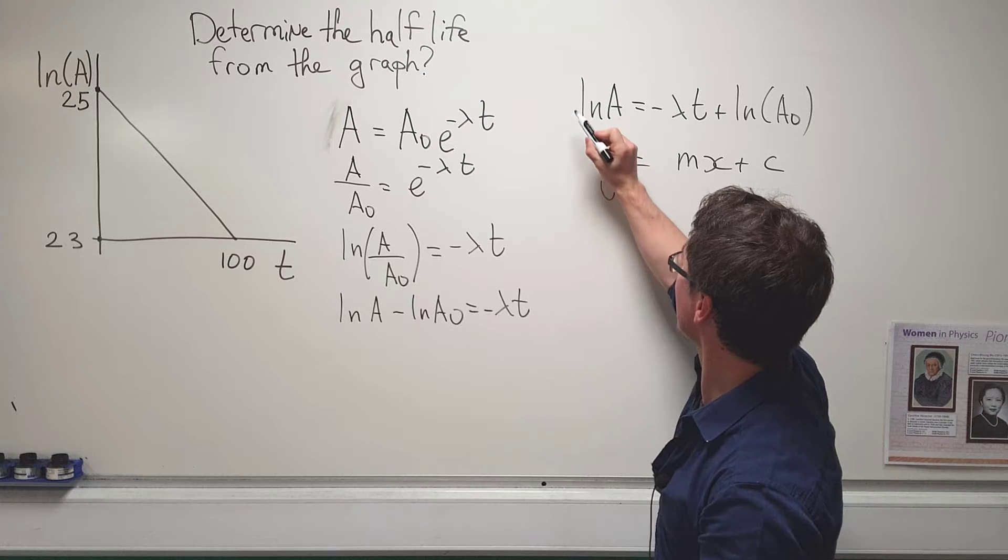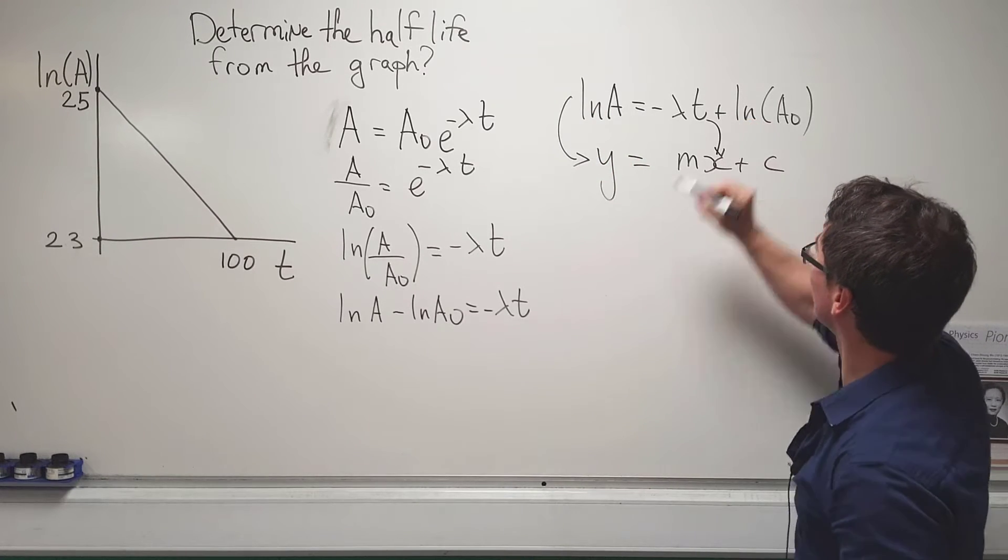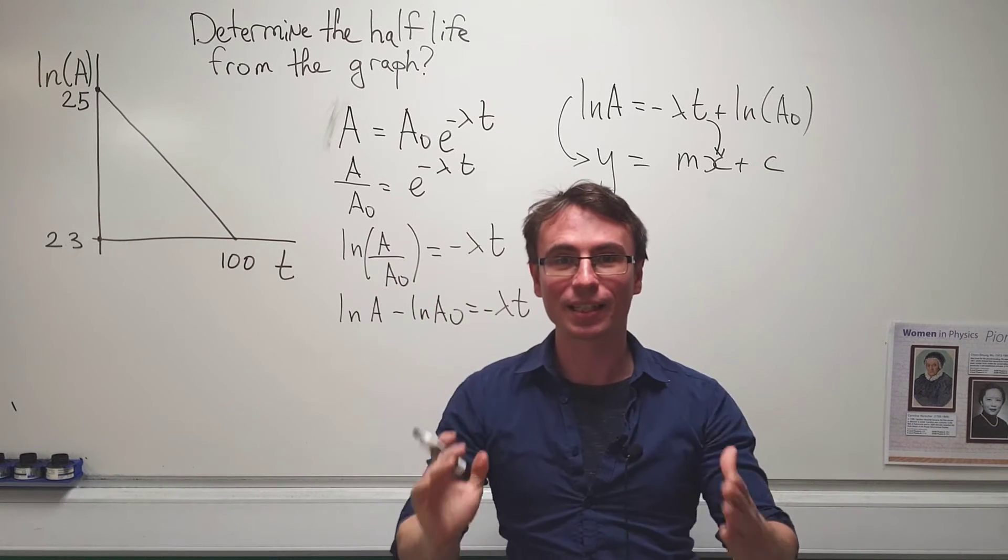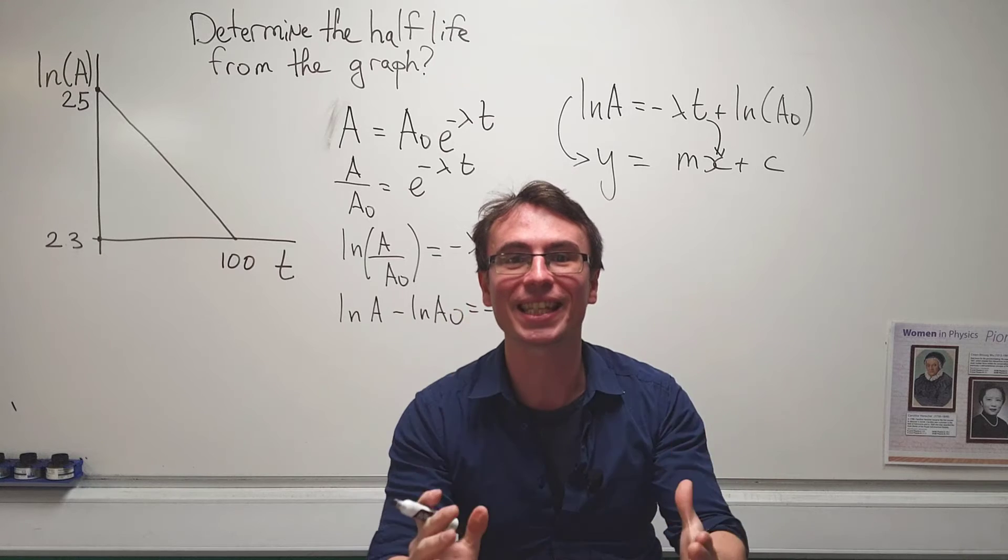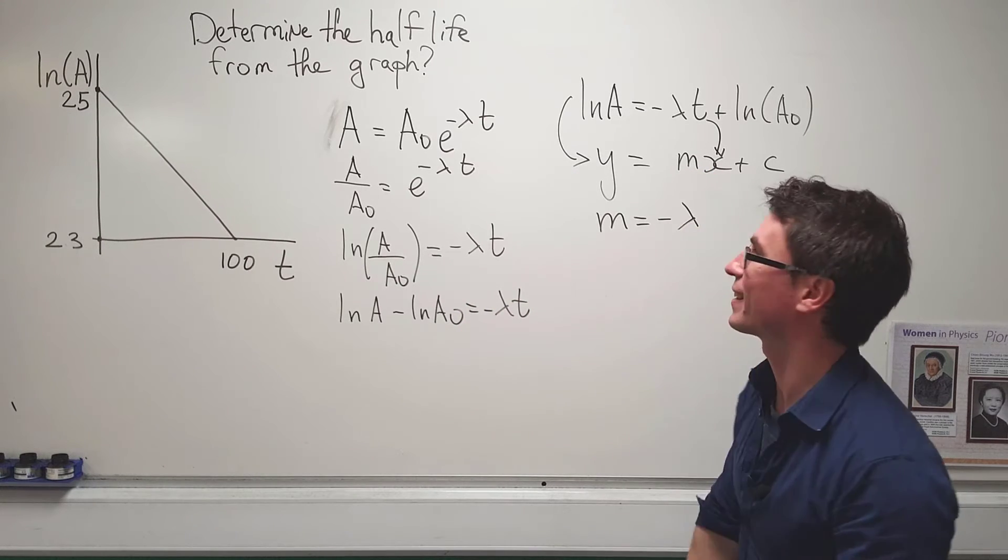If ln of A is on the y-axis, if t is on the x-axis, this means that our gradient will be the negative decay constant. M is equal to minus lambda.